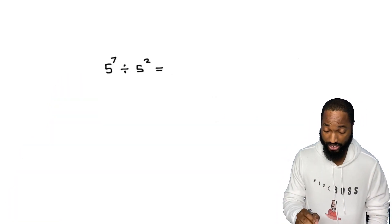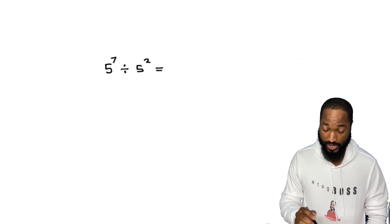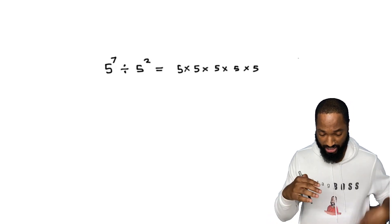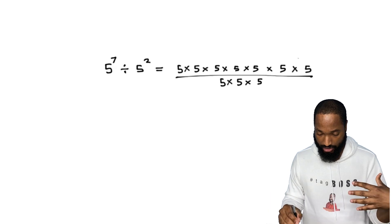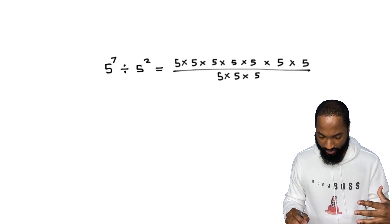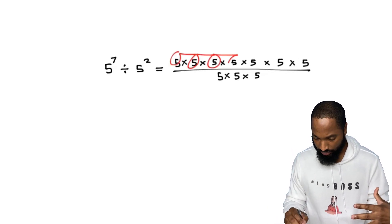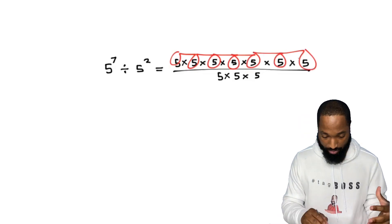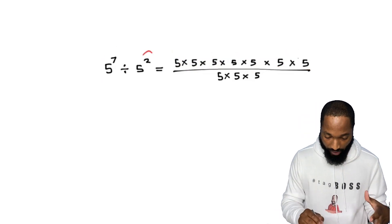All right, what about if we have division now? Let's express it in what division really is. We have five by itself seven times, one two three four five six seven, multiplying by itself, divided by five squared.